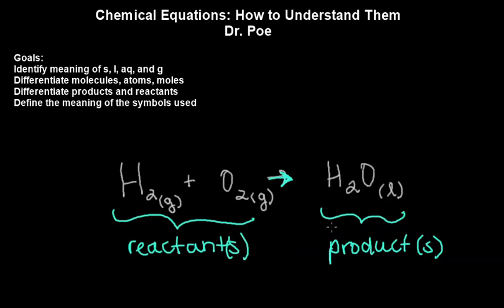Okay, so the reactants form the products. It's always set up this way. The arrow's always right here. Everything on the left is a reactant or reactants. Everything on the right is a product or products.